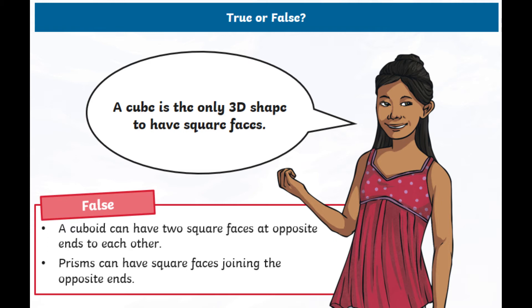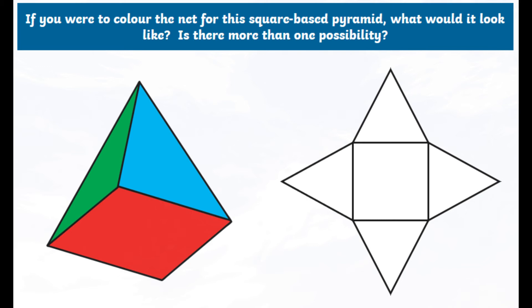Right, now moving on to something a little bit trickier, in my opinion. So we're going to look at a net. So on the right-hand side, where there's no color, we have a net for a square-based pyramid. So a net is something that, if you were to cut that out and fold up the triangles up from the square, you would create the three-dimensional square-based pyramid. Okay, so the question with this net is, if you were to color it, color the net for this square-based pyramid, what would it look like? So if we wanted to create the pyramid on the left with the green, the blue, and the red, what would we have to color on the net to create that pattern?